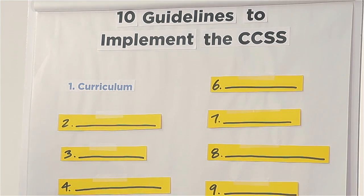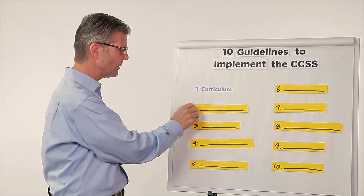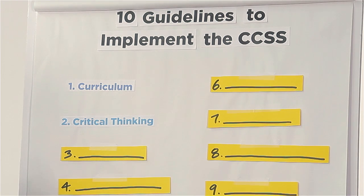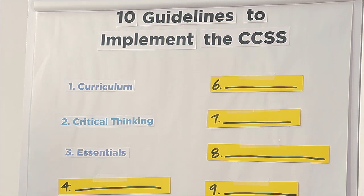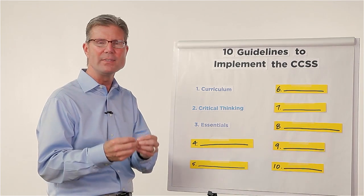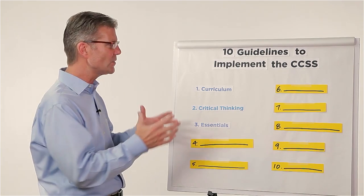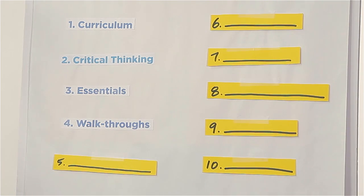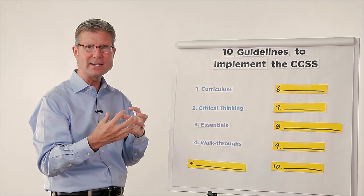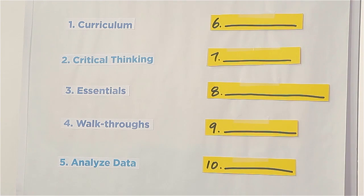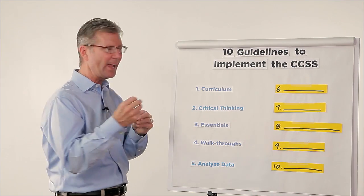The first guideline is curriculum — we all need curriculum that's aligned and that we can articulate to our people, because when there's clarity it increases motivation and performance. The second is the ability in our teachers to grow critical thinking skills; we want to see our teachers skilled and confident in giving that to their students. The third is the essential learning elements — every lesson has those essential pieces students need to learn, and developing tools and processes so teachers can deliver on those is critical. The fourth is the ability to implement walkthroughs that are both intentional and impactful on the practice of teaching, collecting data that can move the needle on a teacher's performance. The fifth element is the ability to analyze data effectively — to understand what metrics are really telling us about student performance and teacher effectiveness.